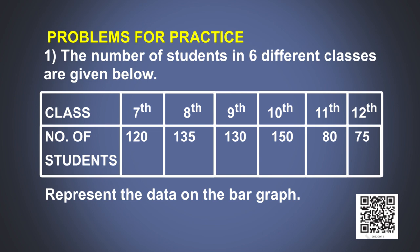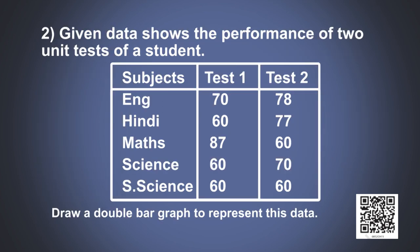Now solve few problems for practice. The number of students in 6 different classes are given below: In class 7th there are 120 students, in class 8th there are 135 students, in class 9th there are 130 students, in class 10th there are 150 students, in 11th there are 80 students and in 12th there are 75 students. Represent the data on a bar graph.